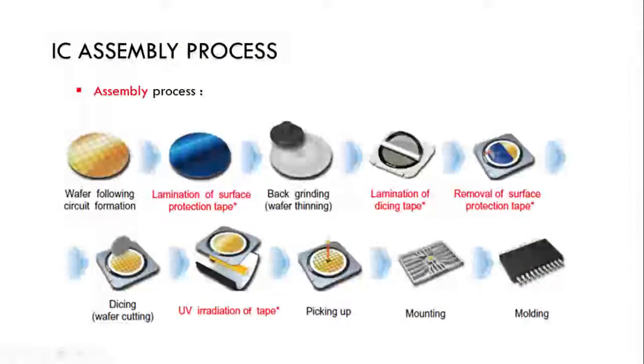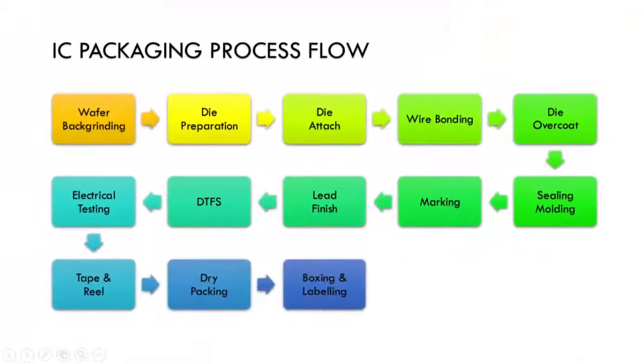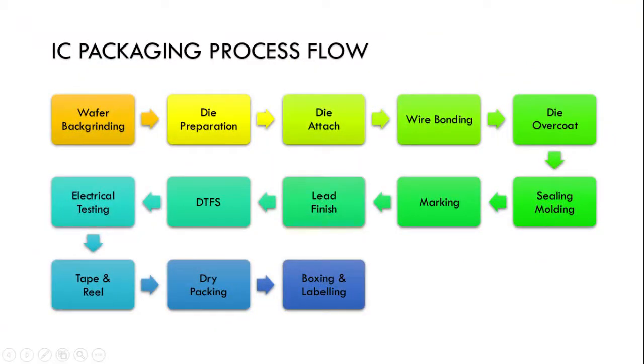The IC assembly process is the process after finishing fabrication, which involves making the packaging of any IC. We have a lot of processes involved in IC assembly, including backgrinding, dicing process, and molding process.